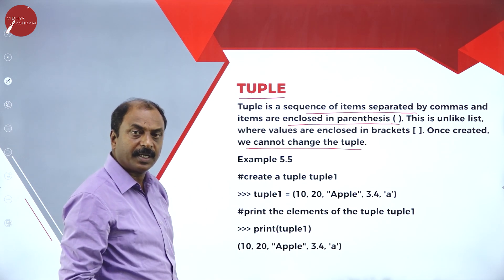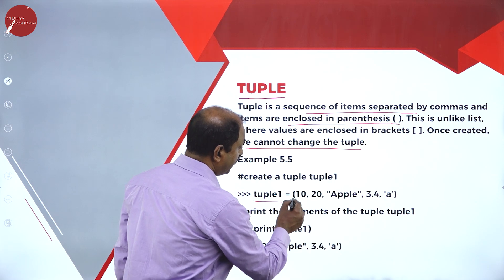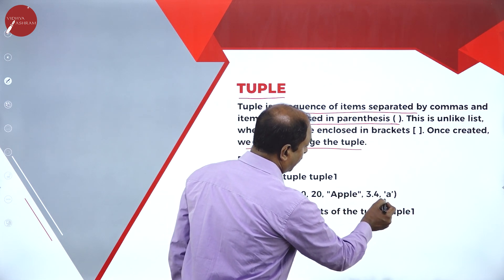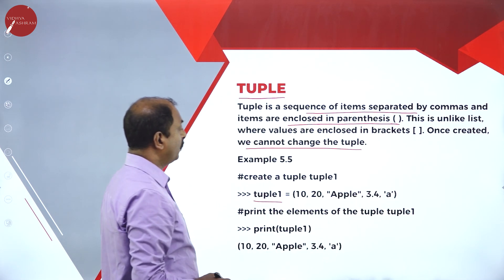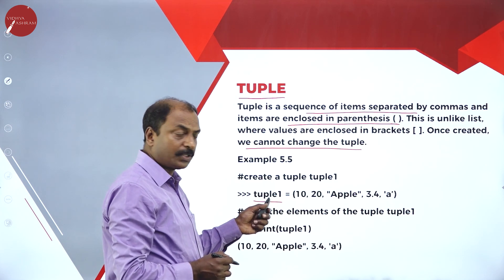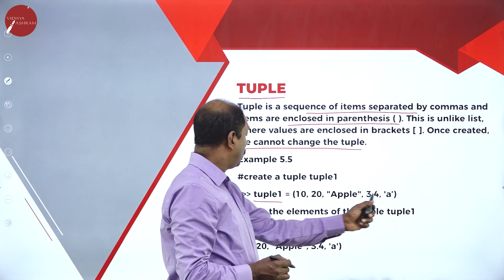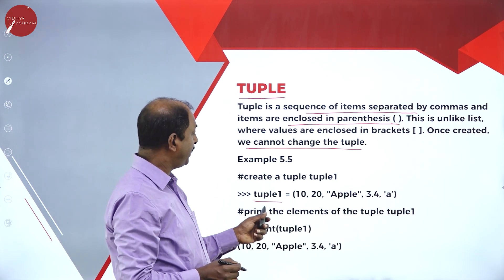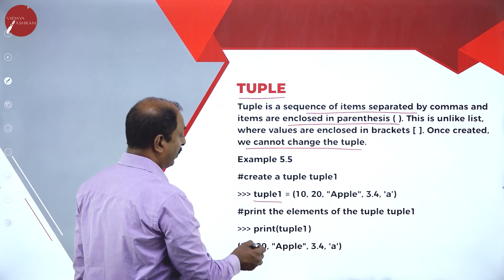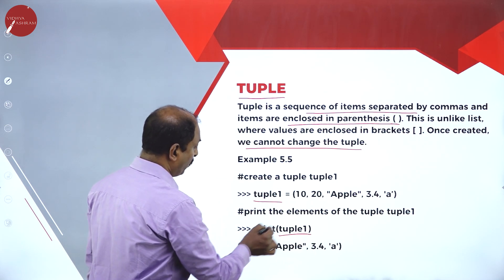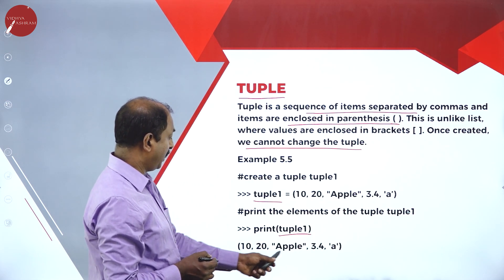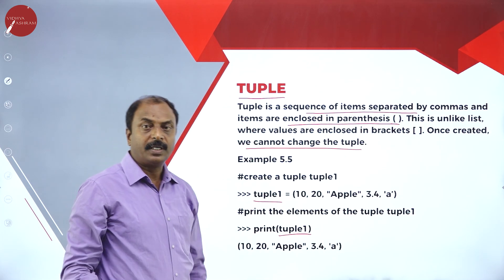Look at this example: tuple1 equals small bracket 10, 20, 'apple' in double quote, 3.4, 'a'. Here tuple1 is the name of the tuple or identifier, and these are the contents — the values stored inside tuple1. It is a tuple, a data type. If you want to print the elements, as we have done in the previous example: print tuple1. Print is an output statement, so the values of tuple1 will be printed on the screen.